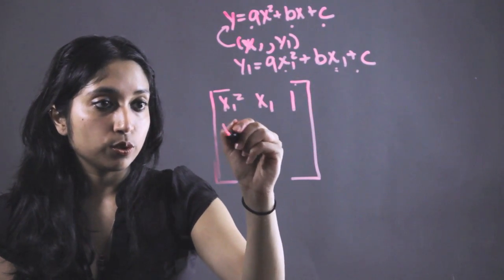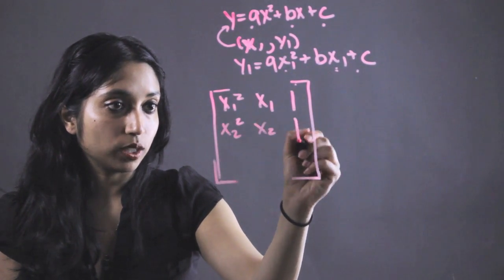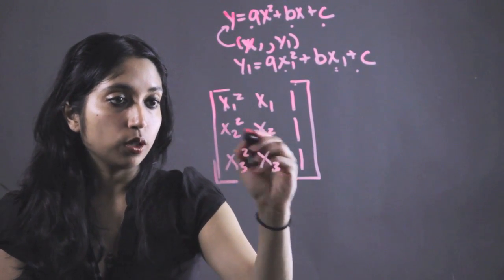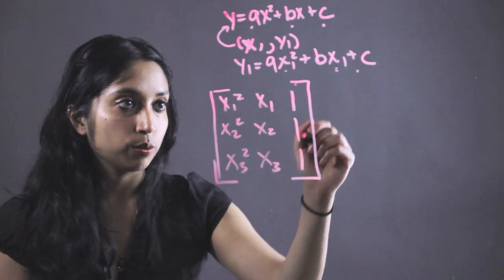And then the other two would be the exact same thing: x2 squared, x2, 1, x3 squared, x3, and 1. Where x2 and x3 are the other points that we would be given.